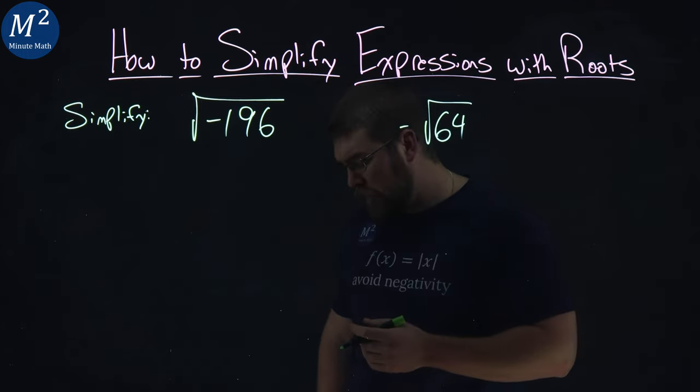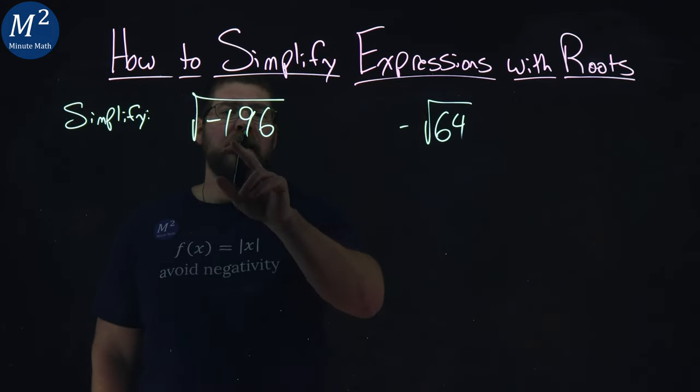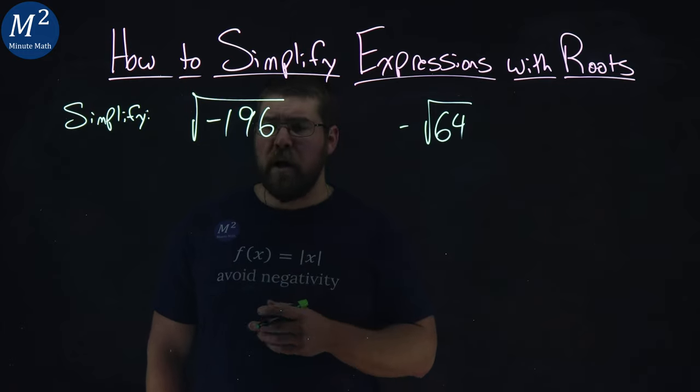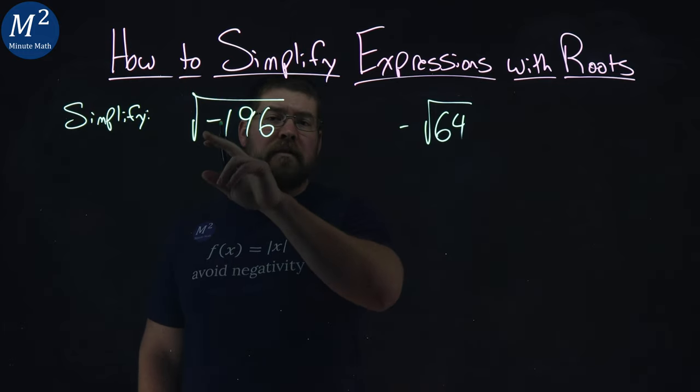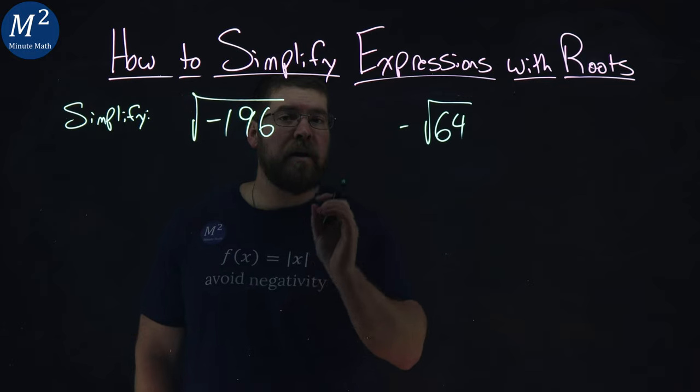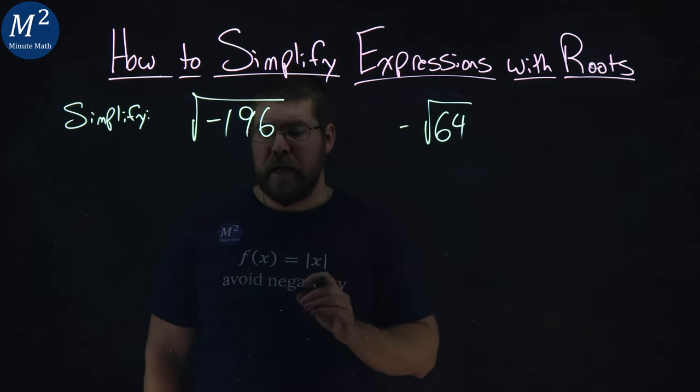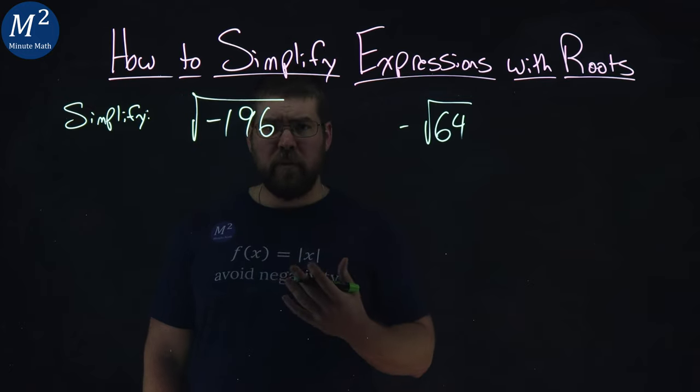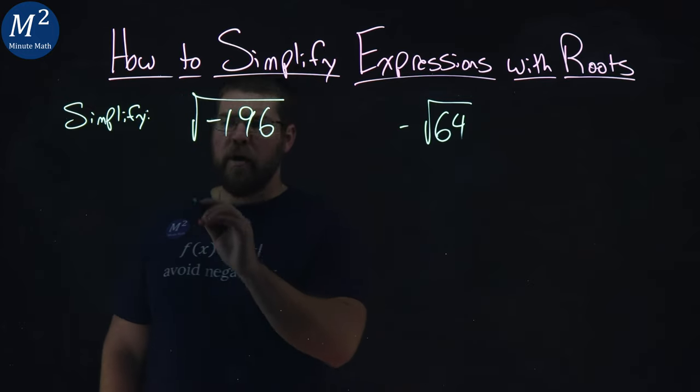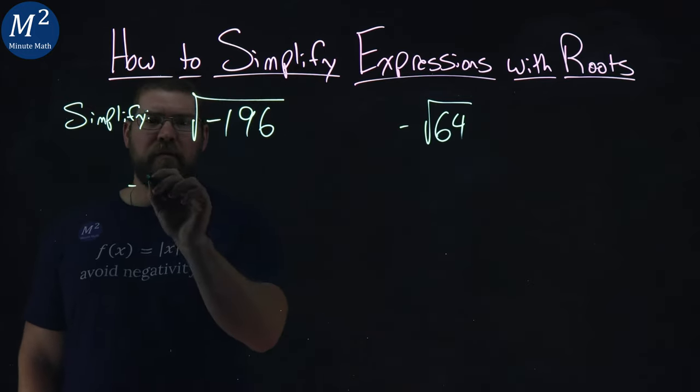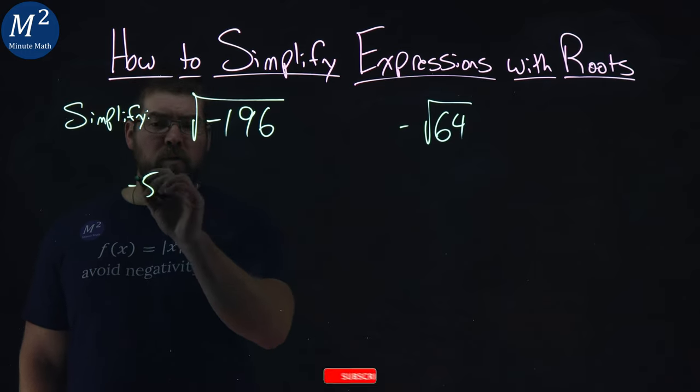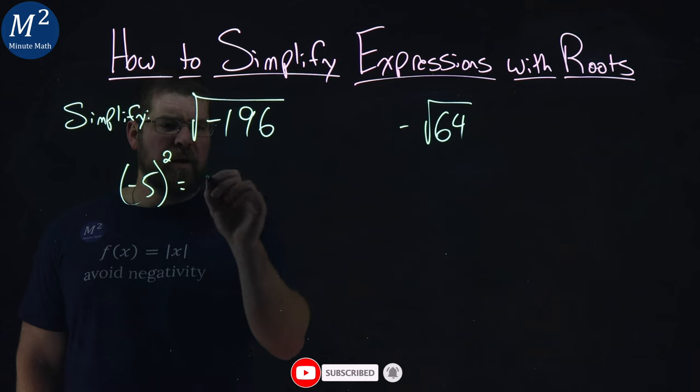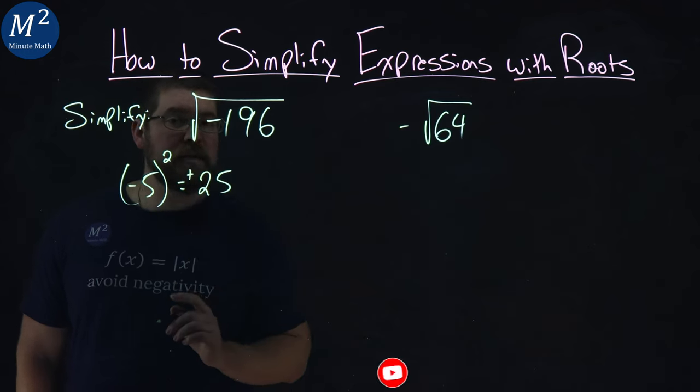So let's look at the first one. We want the square root of negative 196, and I see a red flag right off the bat. That red flag here is that negative sign—it is inside of a square root. Can any number squared get me a negative number? Just think about it. If we have a negative number, let's say negative 5, and I want to square that negative 5, that's a positive 25. It's a positive number.